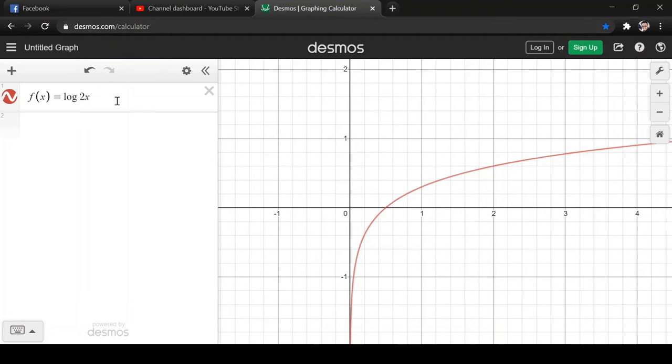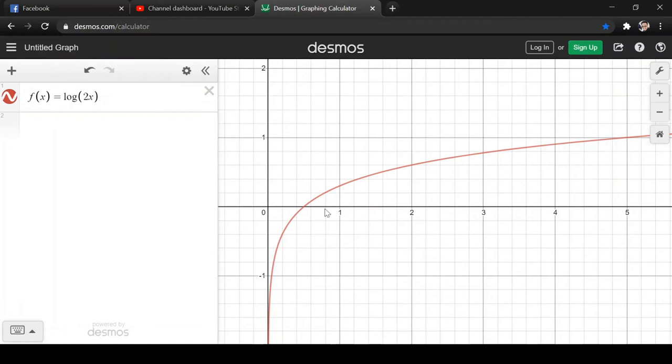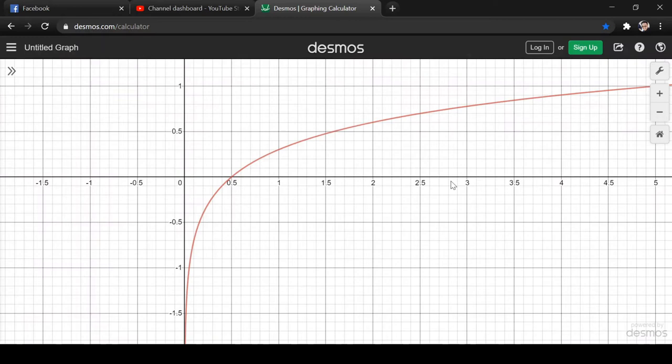Taking this as an example, we have log of 2x. Our base is 10. Observe, based on our x-axis, we are going to look at the values of x. Observe that there is only a graph, the graph exists only if our values is greater than 0.